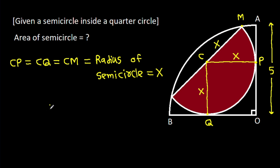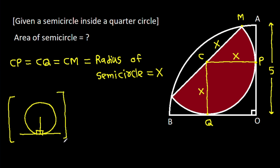In any circle, the radius and tangent are perpendicular to each other. So CP is perpendicular to AO, and CQ is perpendicular to BO.